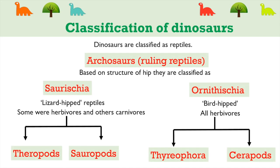Classification of dinosaurs is very important to understand and study them in a better way. Dinosaurs are classified as reptiles, and the term archosaur is used to describe these ruling reptiles. Based on the structure of hips, they are further classified as Saurischia and Ornithischia. Lizard-hipped reptiles come under Saurischia — some were herbivorous and others were carnivorous — and this group is further divided into theropods and sauropods.